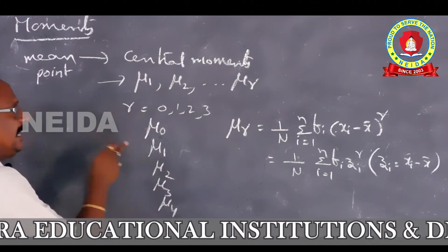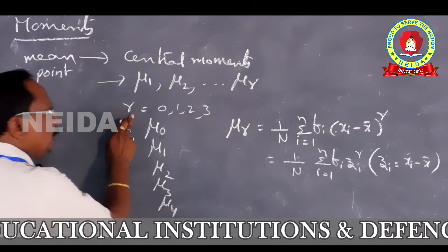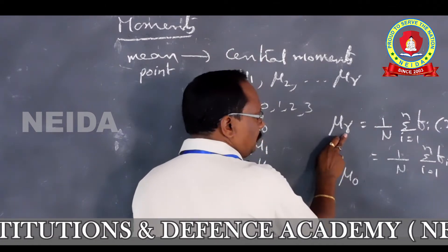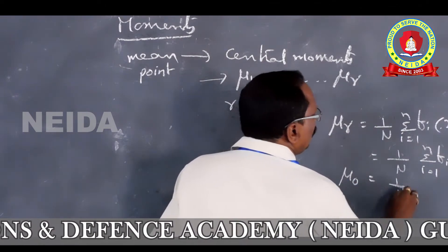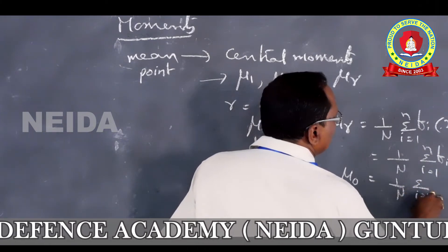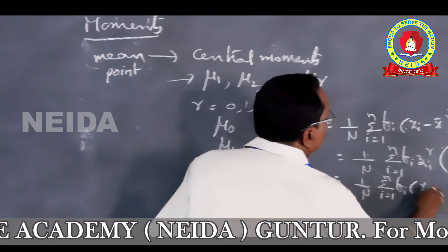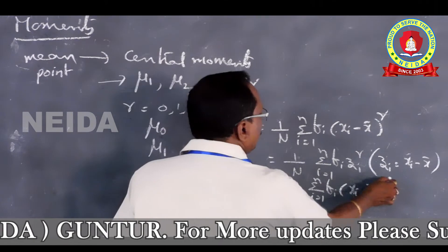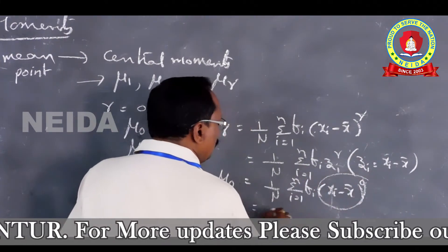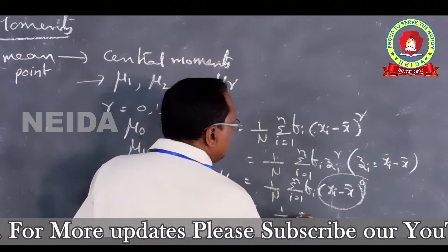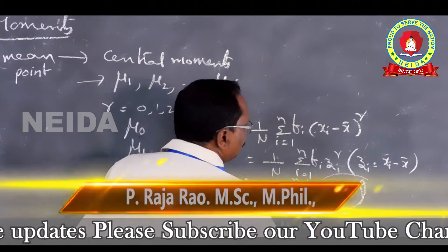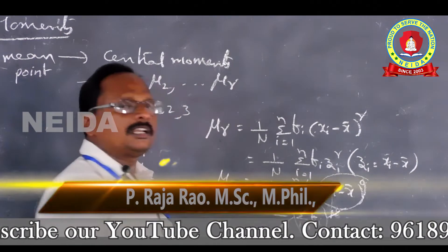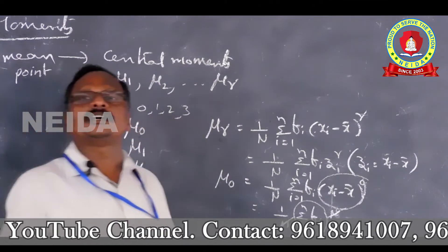If we put r = 0, then μ₀ = (1/n) Σ fᵢ(xᵢ − x̄)⁰. Since anything to the power 0 equals 1, this becomes (1/n) Σ fᵢ. Since Σfᵢ = n, n cancels and we get μ₀ = 1.